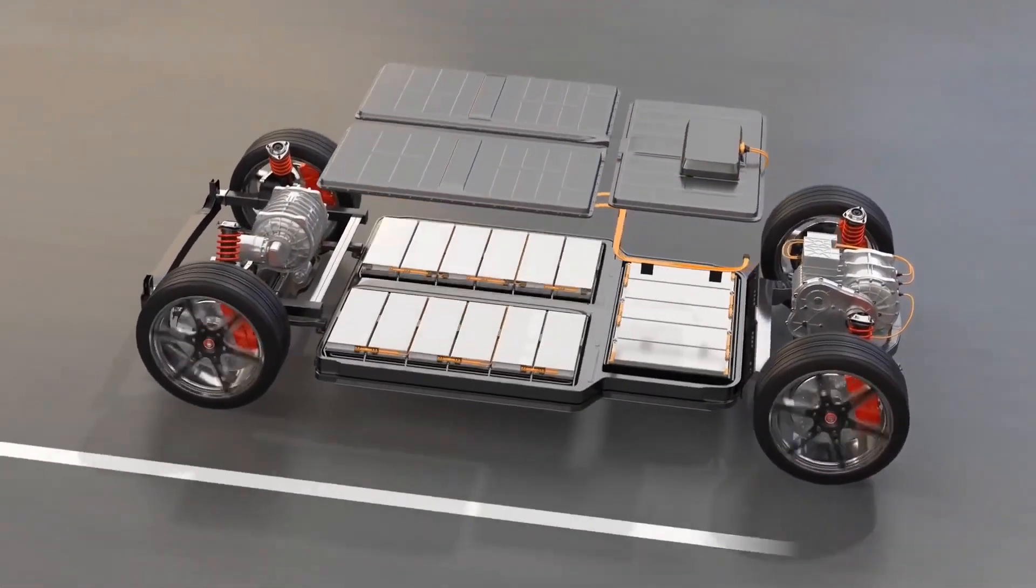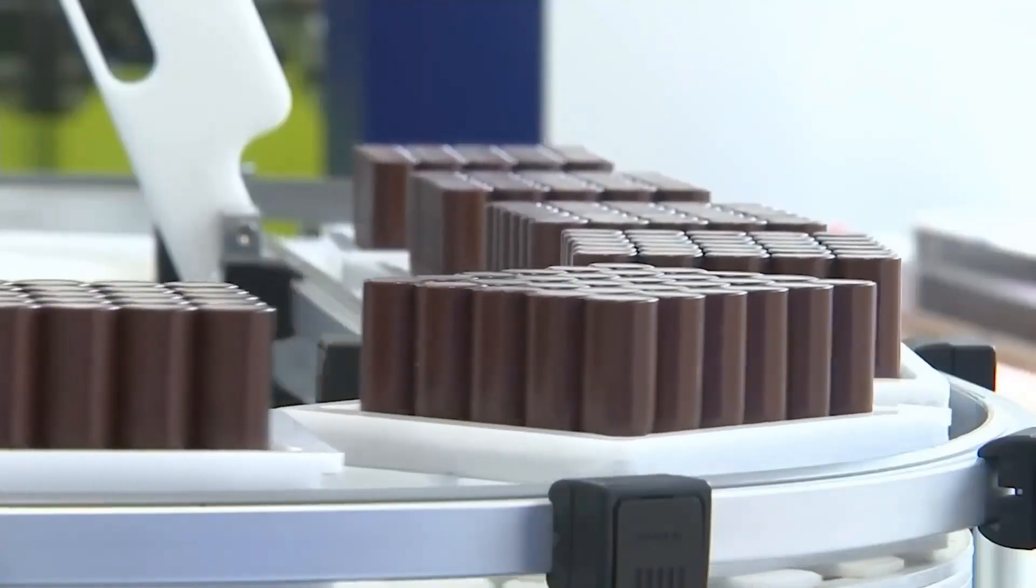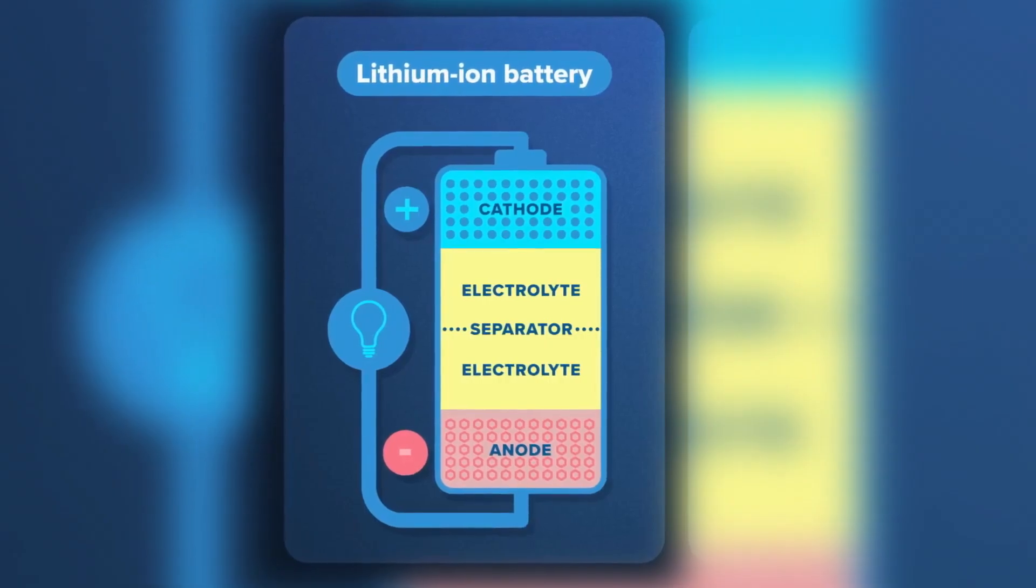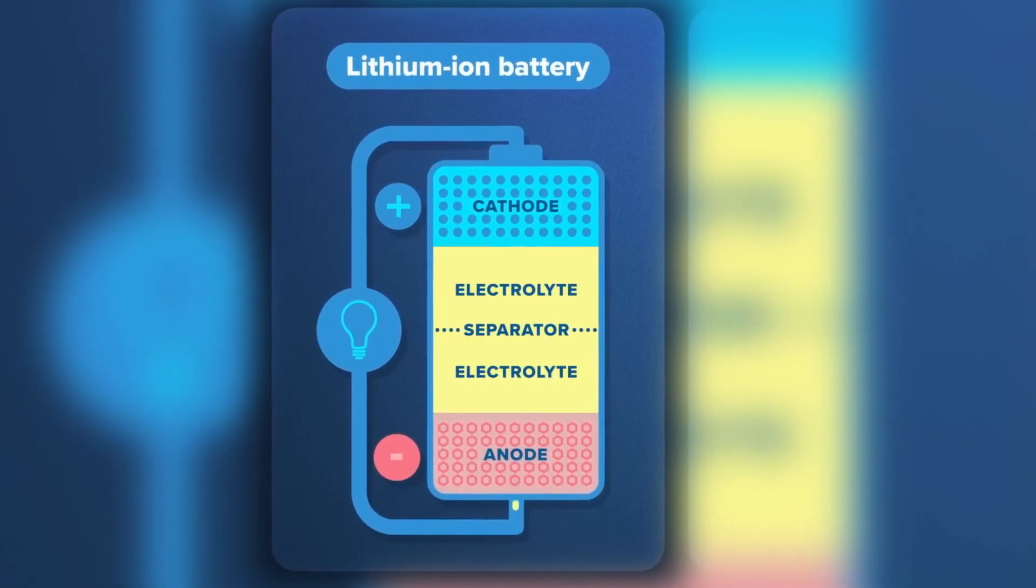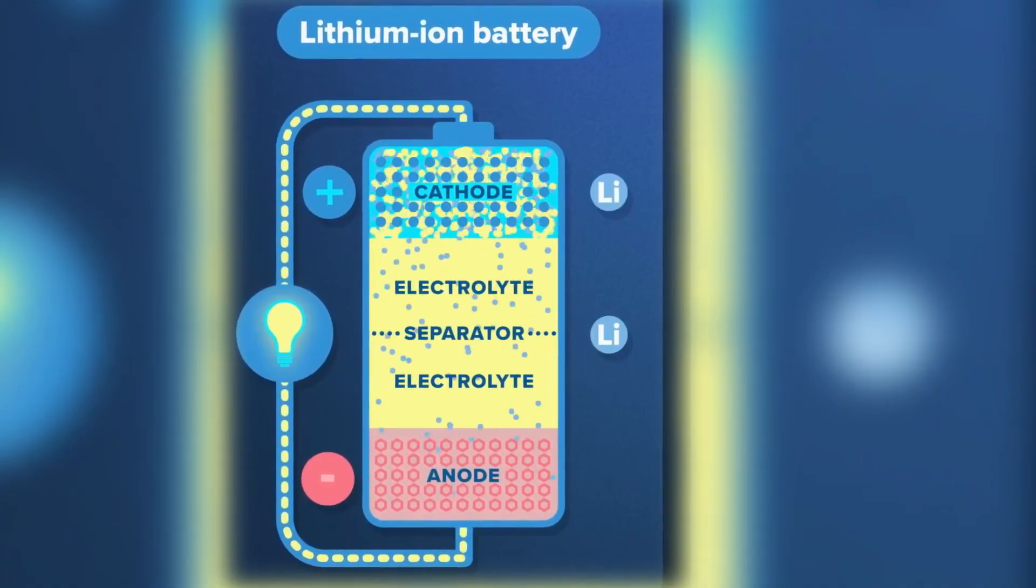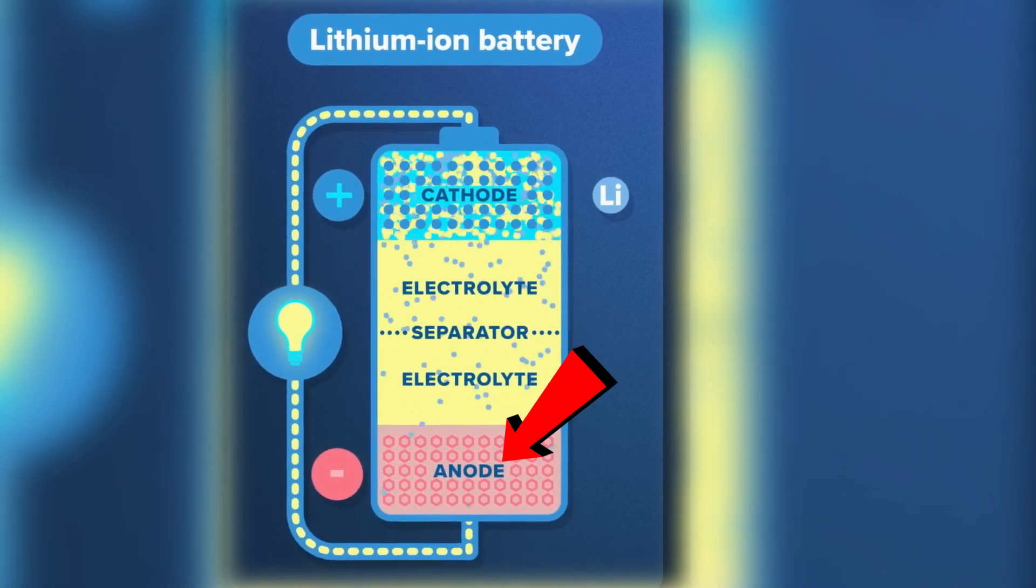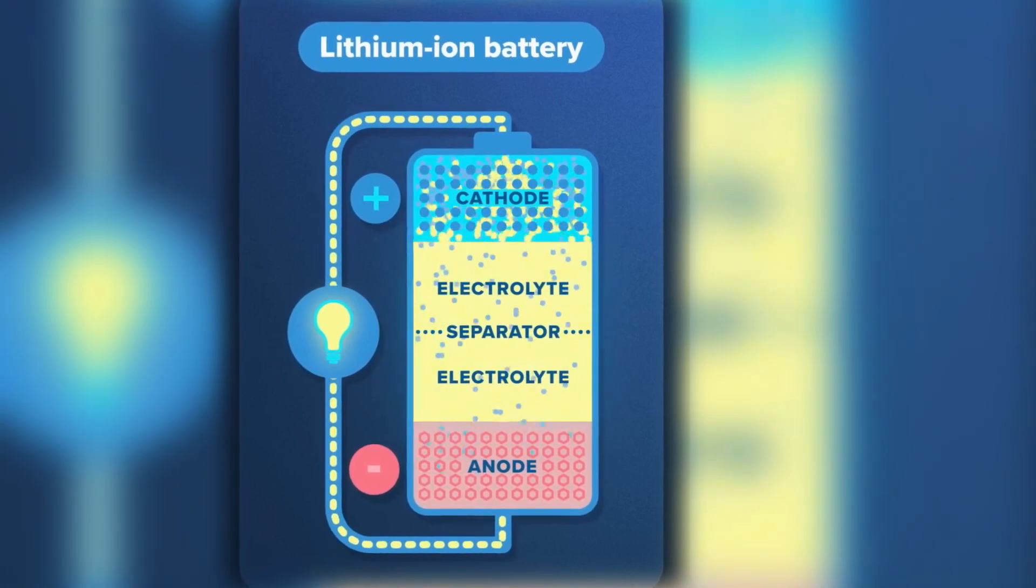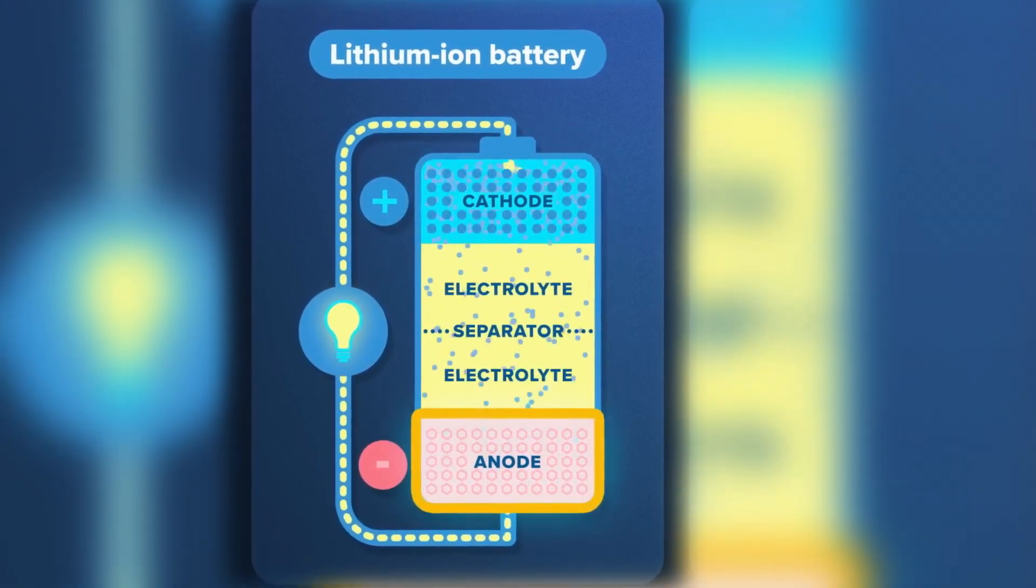The lithium-ion batteries used in electric cars today function based on the movement of lithium ions between positively and negatively charged electrodes—the cathode and anode. When charging, lithium ions move from the cathode, often made of cobalt, to the anode, frequently comprised of graphite, and a redox reaction occurs. The lithium ions shift from the positively charged cathode through a liquid electrolyte to the negatively charged anode.